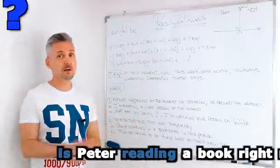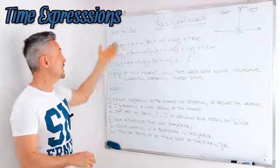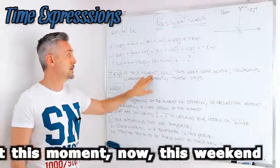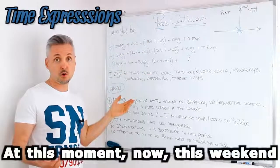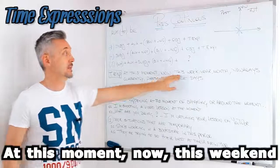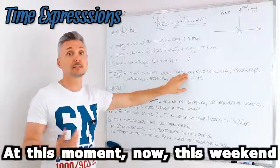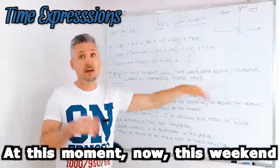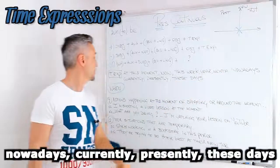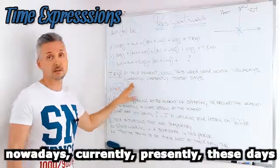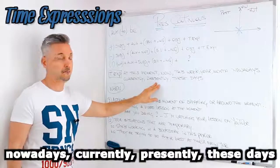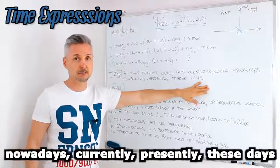The time expressions that we use with the present continuous are: at this moment or at the moment, now, this week, this year, this month, etc., nowadays, currently, presently, and these days.